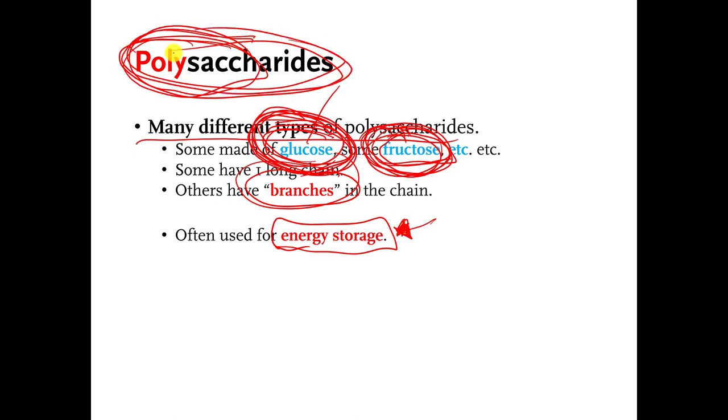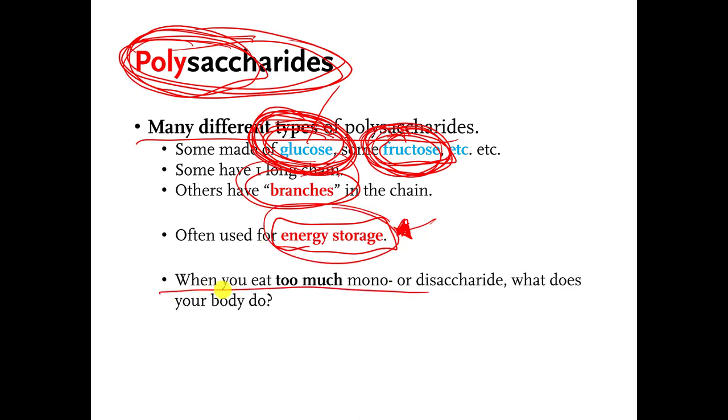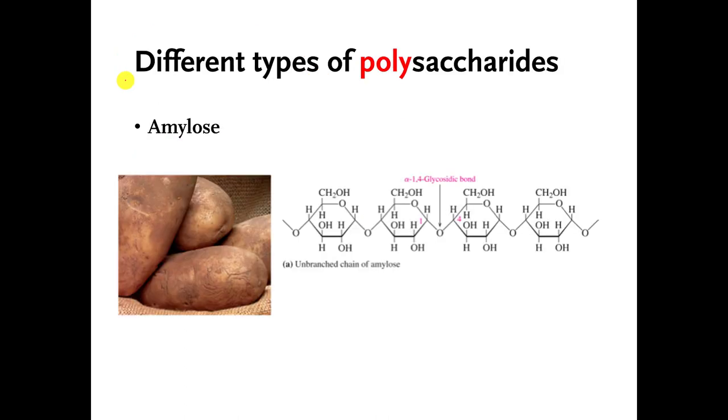So, a lot of times polysaccharides are just used for energy storage. This is just what's shown in this bullet point. When you eat more than enough mono and disaccharides, in other words, if you eat a lot of sugar and you don't need the extra energy, your body will basically connect a bunch of those mono and disaccharides together, make a polysaccharide, and shove the polysaccharide in a closet somewhere in the cell and say, maybe I'll need you later.